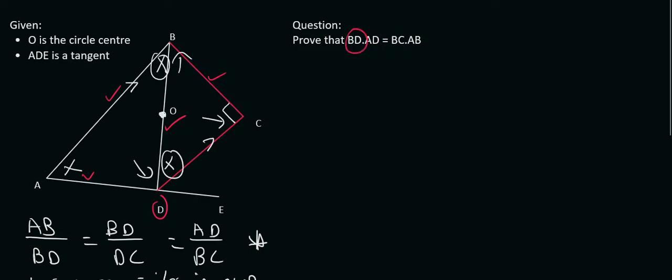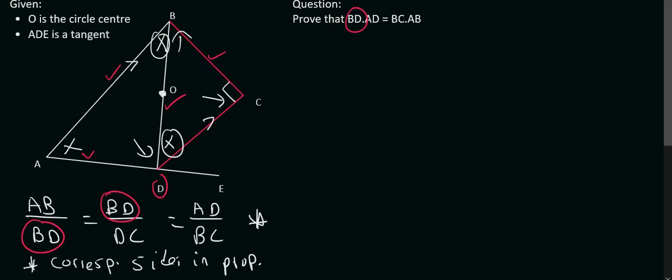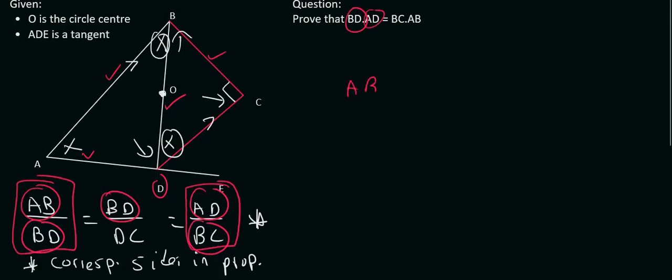So now what we can do is look at what we're looking for. So we need BD. So that's over here and also over here. And then they also want AD. So that's over here. And then they want BC, which is over here. And then they want to choose would be the first and the last. So we can say AB over BD equals to AD over BC. Cross multiply gives us AB times by BC is equal to AD times by BD.